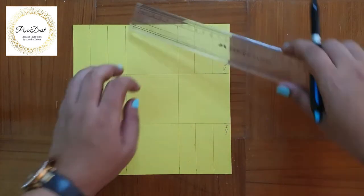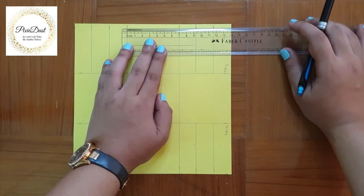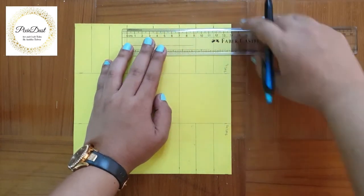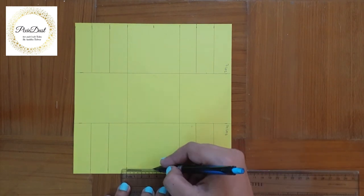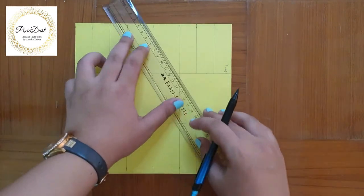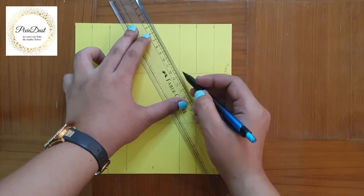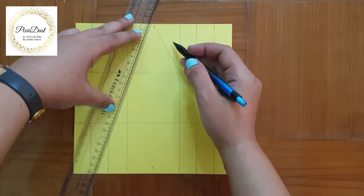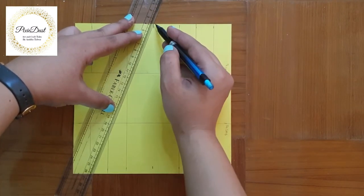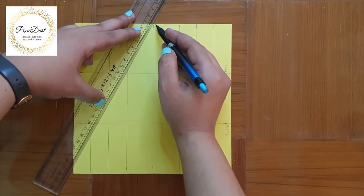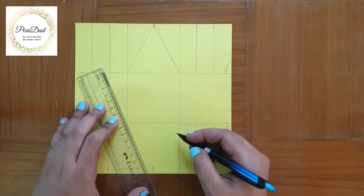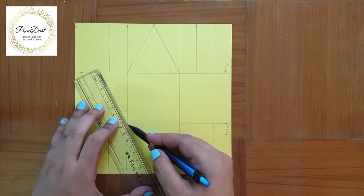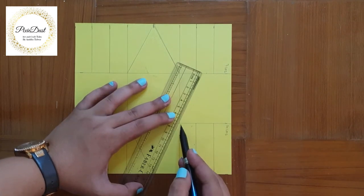Now I'm going to mark a midpoint in the square in the middle which comes out at 3.5 centimeters. Now I'm going to draw a triangle in the middle square. Similarly, I'm going to draw another triangle in the middle square at the bottom.